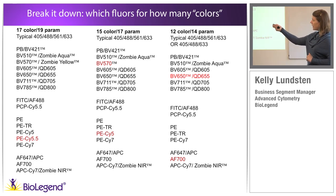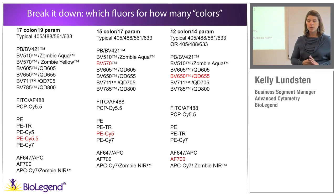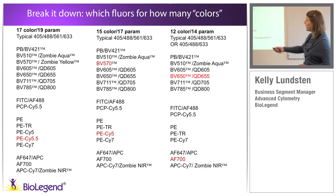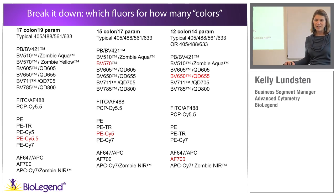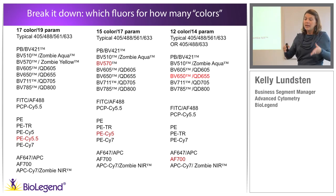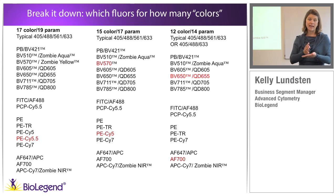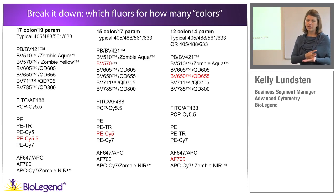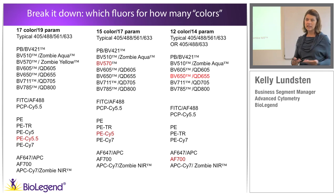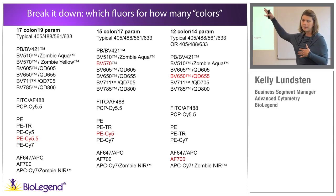Inserting a live-dead probe — our live-dead fixable zombie dyes — is a great way to clean up problematic channels. If I'm using all seven potential fluorophores off the violet laser, using a live-dead fixable there helps clean up all the overlap because I'm dumping that signal. As long as I titrate the live-dead fixable probe down so live cells have very little background fluorescence, I'm dumping dead cells well before the rest of my analysis — a great strategy to clean up overlap in that space.